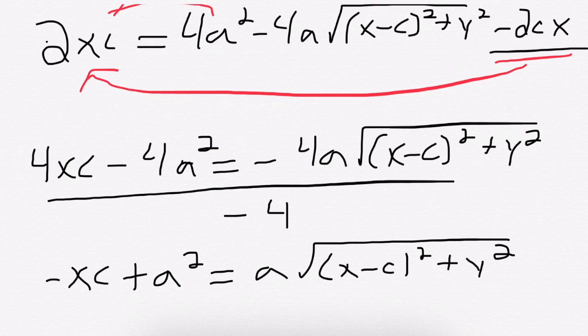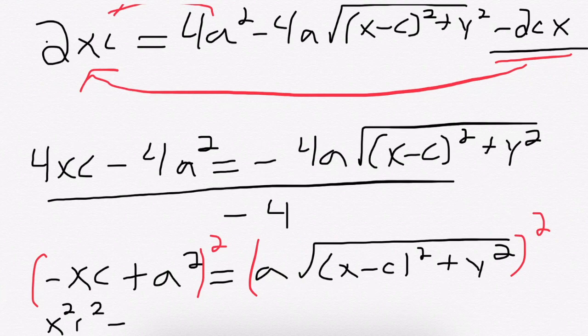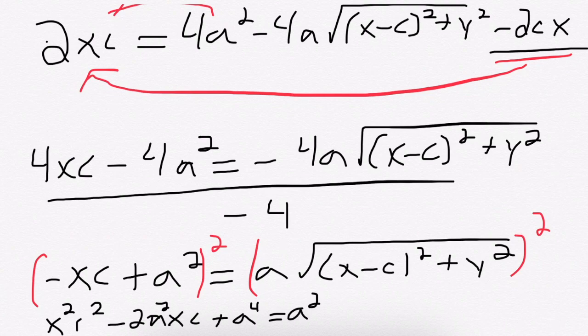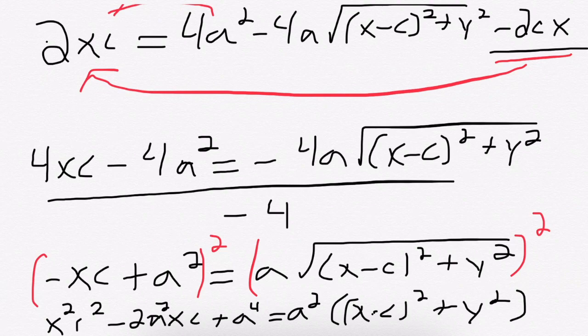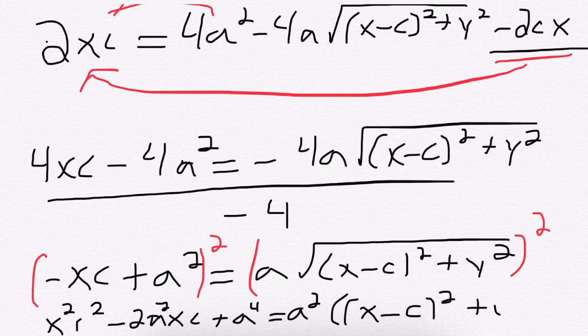And what that's going to give me, squaring on the left side, x squared c squared minus 2axc plus a to the fourth is going to equal a squared times everything on the inside. Our x minus c squared and our y squared. It looks like we haven't made that much progress, but actually we're getting super close.